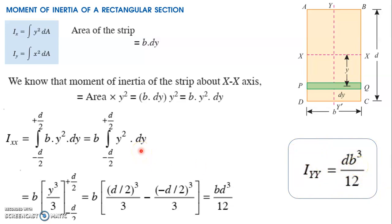That is the equation for moment of inertia of a rectangular cross-section with respect to the centroidal axis, where the axis is kept at the centroid. There is also an option to place the axis at other points such as point D, point C, point B, or point A, in which case the moment of inertia equation will vary — we will discuss that later.